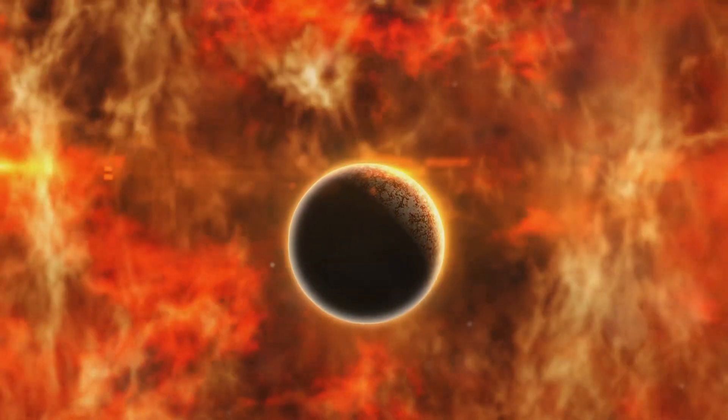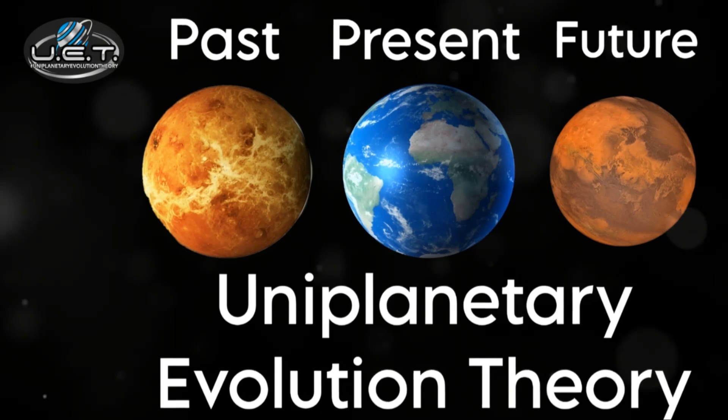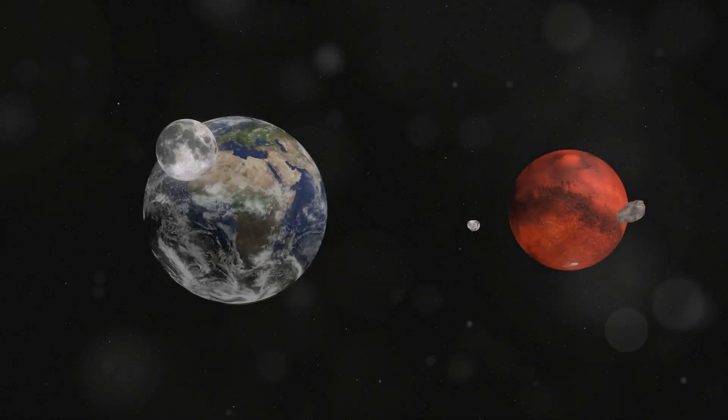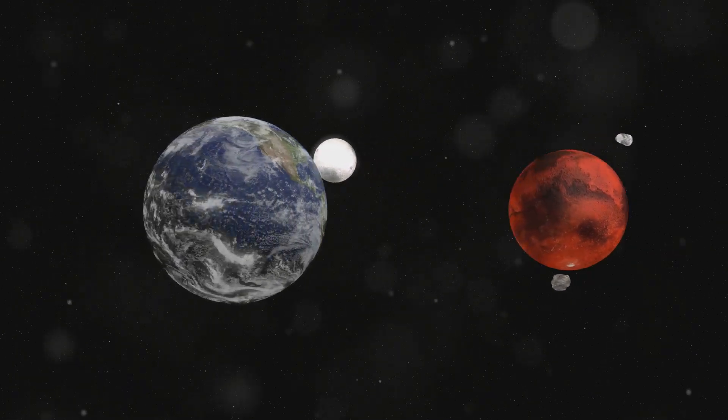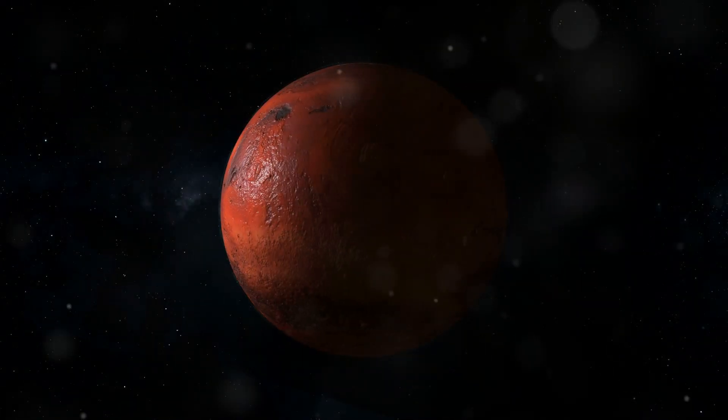We could be witnessing a glimpse into our own planet's birth, a look back billions of years. This theory suggests that Venus is Earth's past and Mars is Earth's future. A barren landscape, a broken moon and a lost electromagnetic field. It's a stark reminder of what could lie ahead.